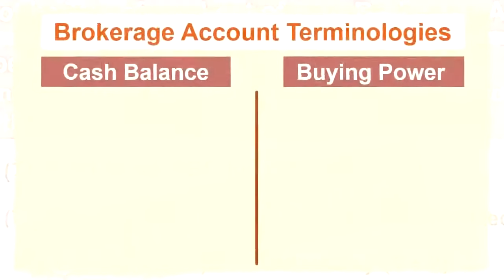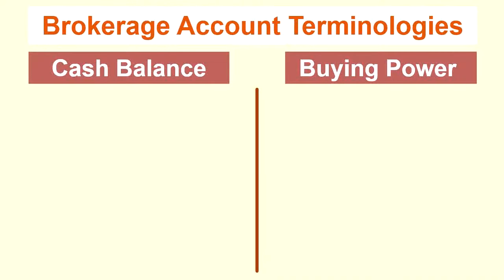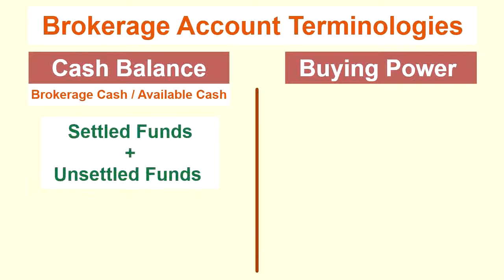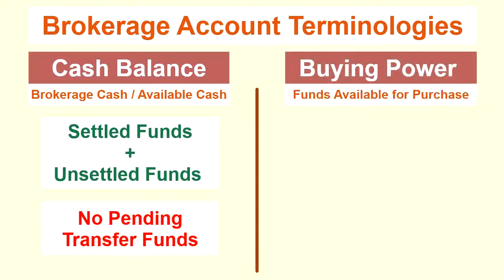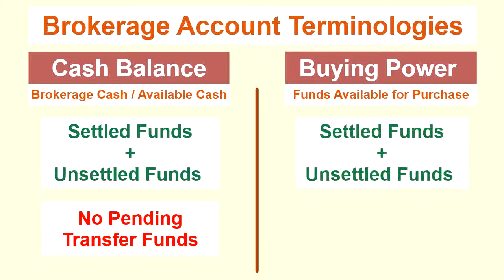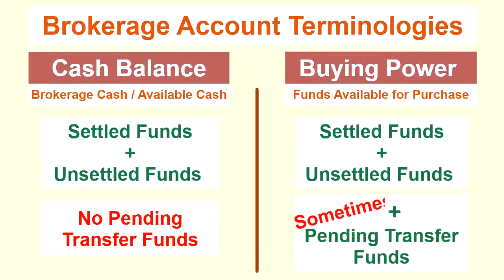Cash balance, also referred to as brokerage cash or available cash, is the sum of the settled funds and unsettled funds in your account and does not include any pending transfer funds. Buying power, which is the funds available to purchase stocks, is also the sum of settled and unsettled funds, but it can also include pending transfer funds — though not always. So if there are no transfer funds pending, the cash balance and buying power will always be the same.